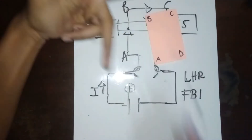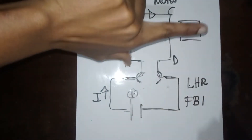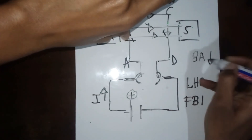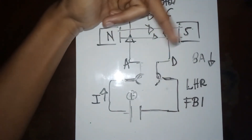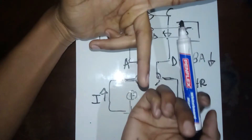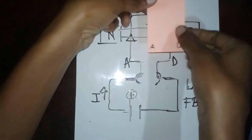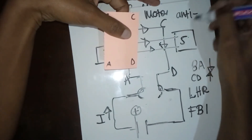Focusing on side AB: the direction of the current is going that way, and my index finger points from north to south pole. My thumb points downward, meaning AB will go down. For CD, the current is going in the opposite direction — applying the left-hand rule, CD is actually going up. So if AB is going down and CD is going up, this coil is rotating in the anticlockwise — or counterclockwise — direction.